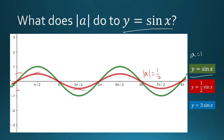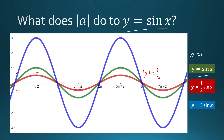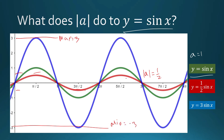What if our a is equal to 3? What will it do to the graph of our simple sine function? It will amplify. This is the graph of y equals 3 times sine of x. Our new maximum is now 3 and our new minimum is equal to negative 3, so the amplitude for this one is 3.